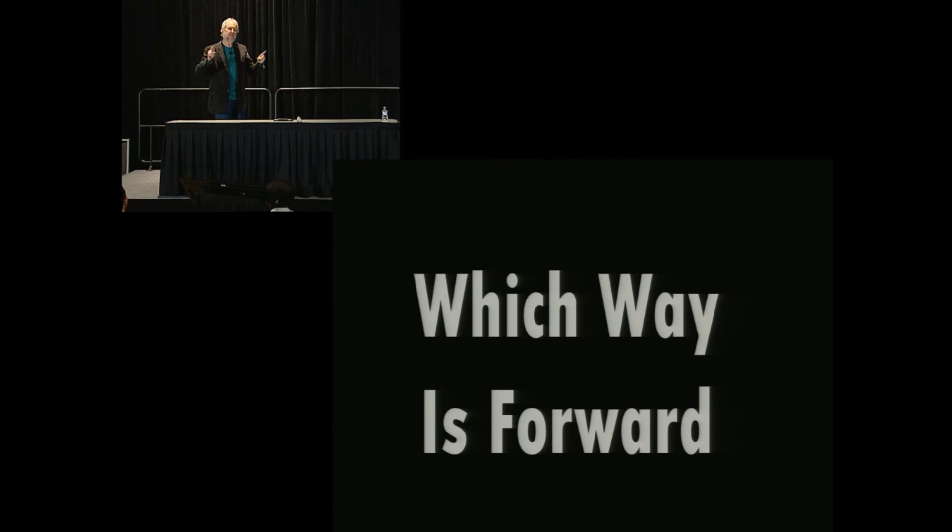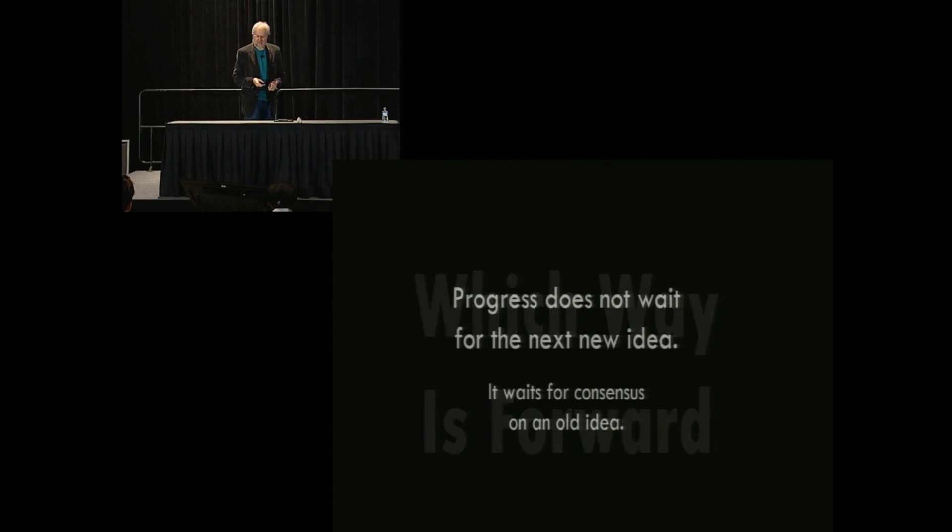So I'm going to give you the punchline to this talk now. I think it's important enough. I don't want to wait till the end. And that is that progress does not wait for the next new idea. It waits for consensus on the old idea. And this consensus can sometimes take decades or more to occur. And I'm going to show you some examples of this. We have this romantic idea about progress where someone discovers something and everybody goes, we've been waiting for this. And then suddenly it's adopted and it changes the world. That never happens. That's not how the important stuff happens.